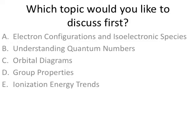Welcome to Chapter 8 Recitation. This chapter is about writing electron configurations. We'll recognize isoelectronic species, understand quantum numbers, and write orbital diagrams that include the electrons. We'll also talk about some group properties and ionization energy trends.